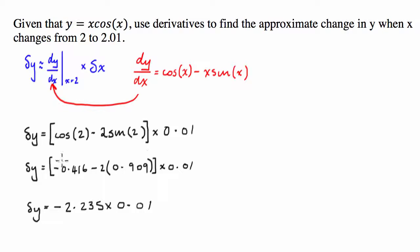And finally we can say, therefore, delta y is going to be equal to, doesn't take rocket science to do that multiplication there, negative 0.02235.